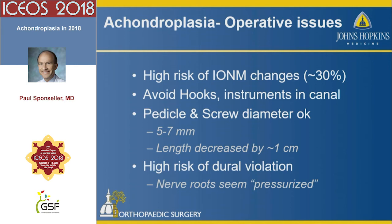Operative issues with achondroplasia include a very high risk of intraoperative neuromonitoring changes because they have no reserve. You should avoid anything that goes into the canal. The pedicle features are mostly workable — they tend to have pedicles that will fit a 5, 6, or 7-millimeter screw. But the length dimensions of those pedicles are usually down by about a centimeter from what you would see in an adult at any given level.